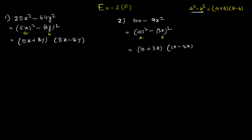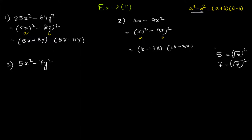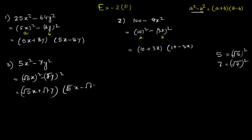Question 3 is 5x² - 7y². Here, 5 and 7 are not perfect squares, but we can use radicals. We write it as (√5·x)² - (√7·y)², so the answer is (√5·x + √7·y)(√5·x - √7·y), which is a + b into a - b form.